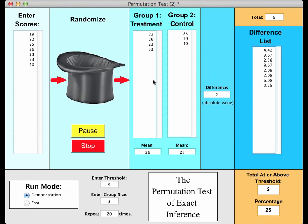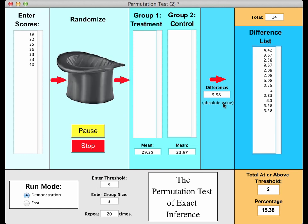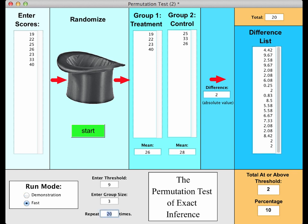Let's do it again to see if it gives us the same result. This time we had only two were at or above the thresholds. This time it was 10 percent. With only 20 repetitions, you're going to have a lot of variation. Why don't we run this a lot more times? This is why I have a fast mode, because this particular app is pretty slow - it takes a lot of time to jiggle the hat and put all the scores in. I just want to do the computation as fast as it can. I'm going to go into fast mode and change the number of times it repeats to 100.